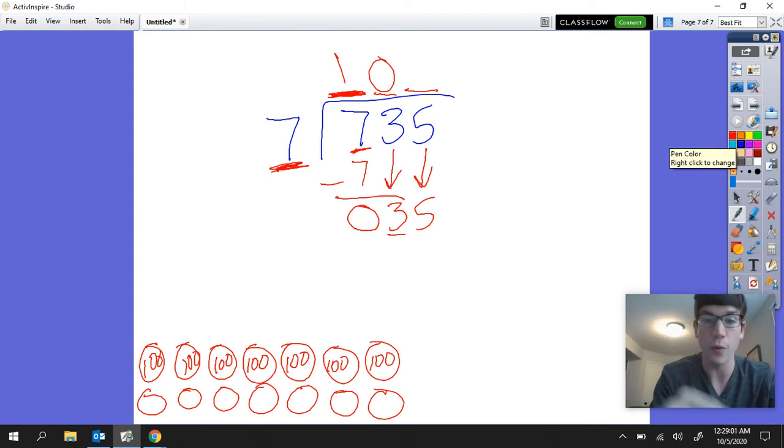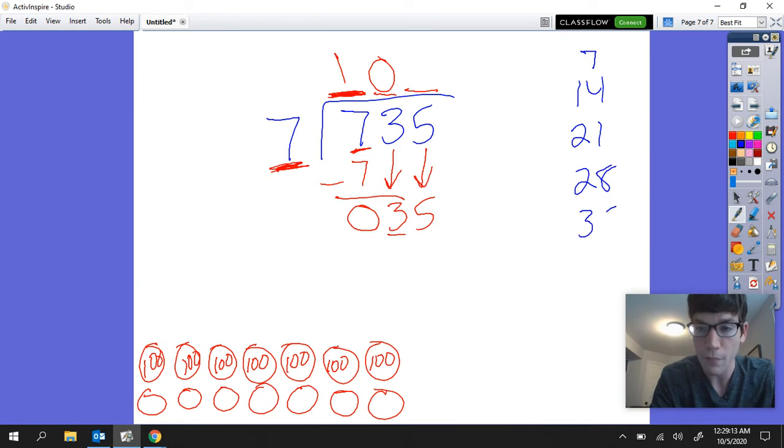Now one thing that I always recommend for students to do is I always recommend students to write down their multiples of the number that we're dividing by. So for example in this case that's seven, so I'm going to write multiples of seven. And another way to say multiples is counting by that number: seven, 14, 21, 28.